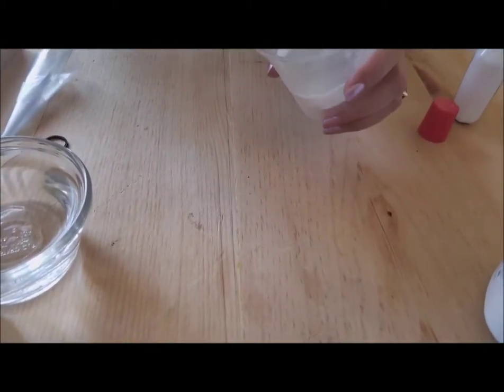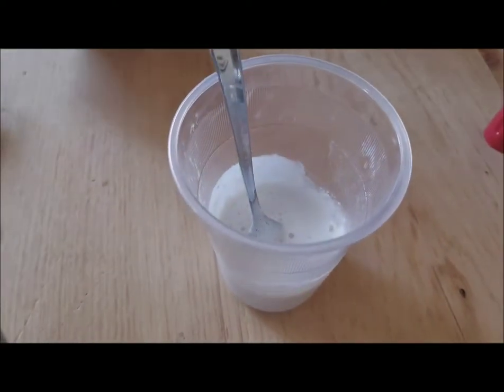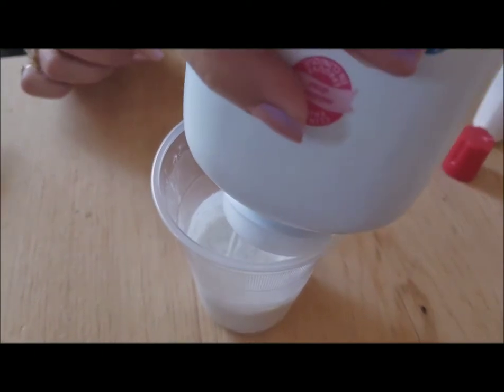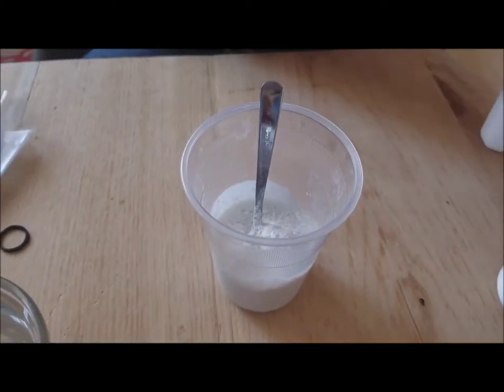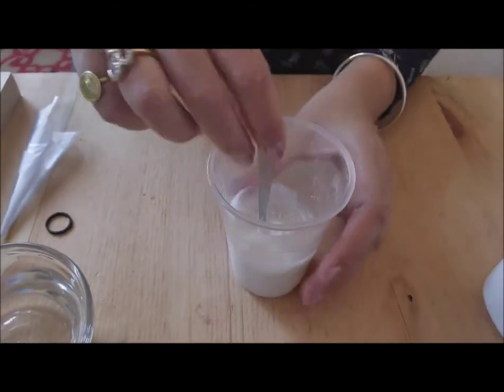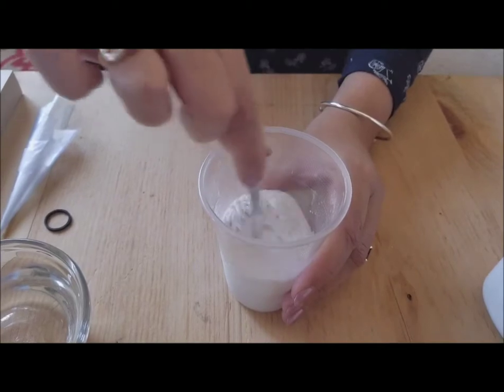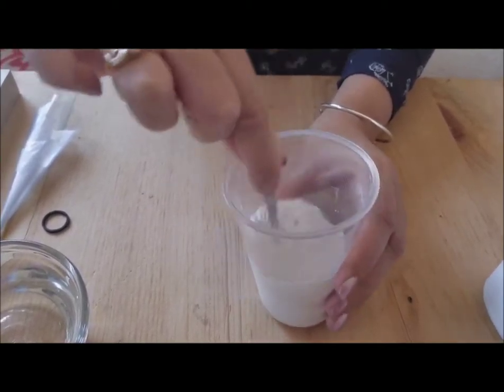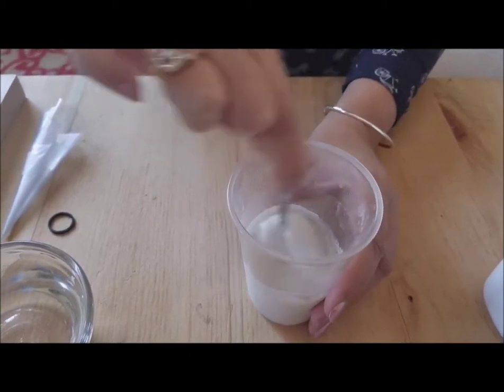You have to add the Johnson's baby powder little by little. In that way there will be no lumps and you can control it, so you don't have to add more water or glue. Just keep adding little by little and you'll get the correct consistency.